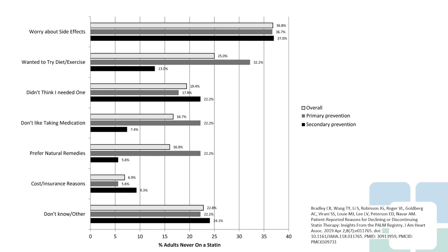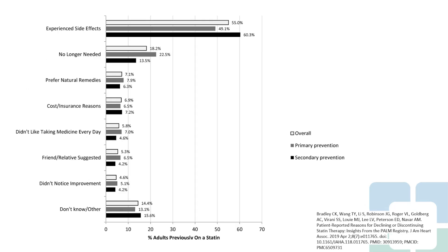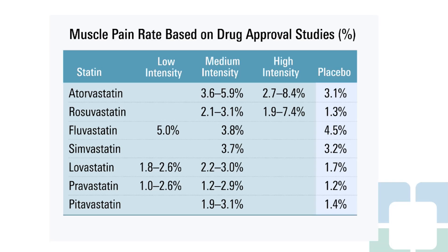When we look at the PALM registry, adults who are never on a statin but would be indicated for one worry about side effects as a reason for not taking the medication, or wanting to try diet and exercise instead. For adults previously on a statin who had stopped, most commonly we see that these adults experienced some side effects. When we look at the drug approval studies for different statins, overall muscle pain prevalence is relatively low as compared to placebo, particularly in hydrophilic statins such as pravastatin.